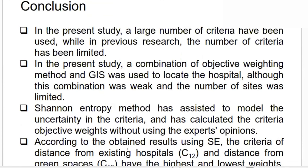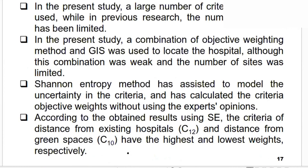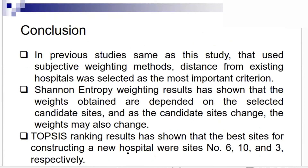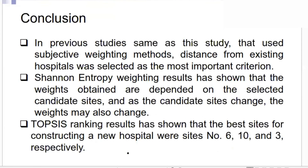For the conclusion, we have a large number of criteria to consider. We have to limit those criteria and select the most probable and most influencing ones. In this study, we combined the objective weighting functions using GIS in order to locate new hospitals, and used Shannon theory to assess the uncertainty and weight of the criteria using experts' opinion. In previous studies, most decision-making was based on subjective weighting methods. We tried to use an objective weighting method and changed the criteria in order to find the best weight for every parameter.